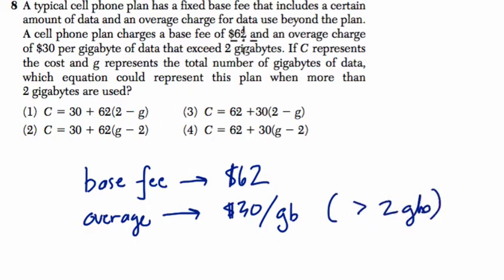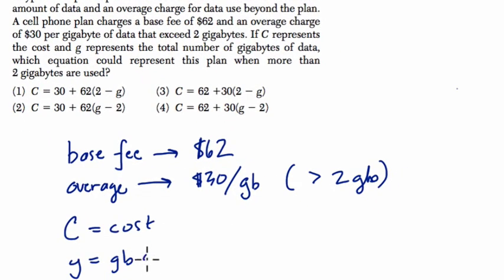Okay, so if C represents the cost, so C is our cost, and G is the number of gigabytes, so C is cost. I like to write this stuff down. So G is the gigabytes of data. Which equation can we make the plan when more than 2 gigabytes are used?